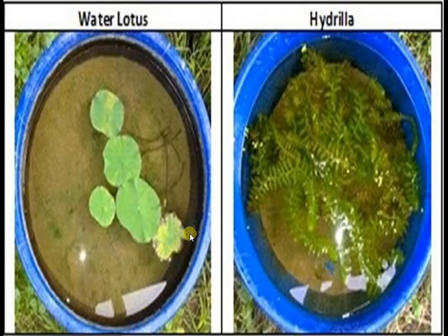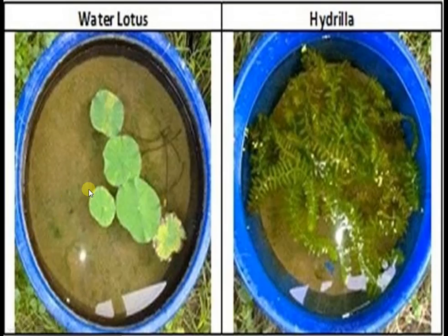Are leaves of all plants growing in the pond similar? No. What is the difference between the leaves of hydrilla and lotus? The leaves of lotus are floating on the surface of the water, while the leaves of a hydrilla plant grow at the bottom of the water.